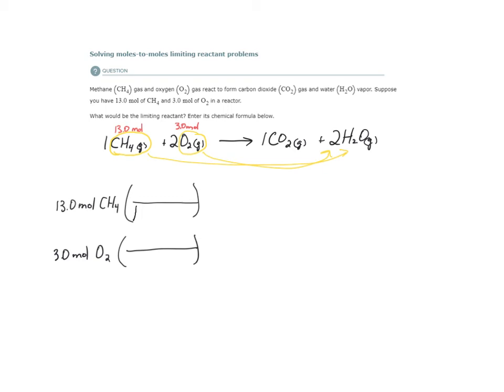The balanced equation tells me that 1 mole of methane produces 2 moles of water. It also tells me that 2 moles of O2 produce 2 moles of water. So I end up with 26 moles of water produced from 13 moles of methane, and I end up with 3 moles of water produced from 3 moles of oxygen.